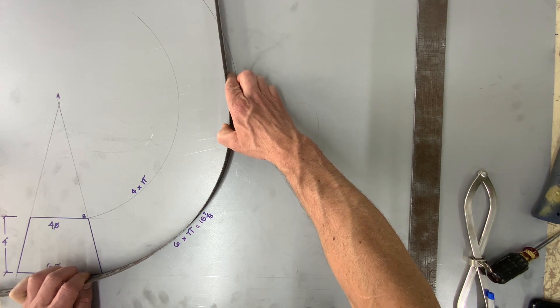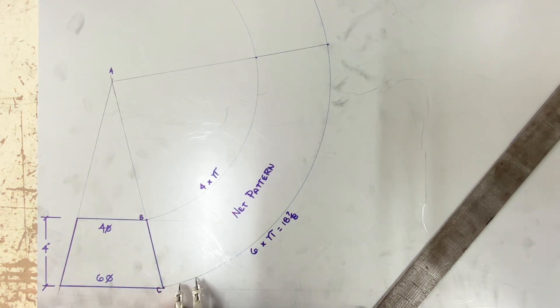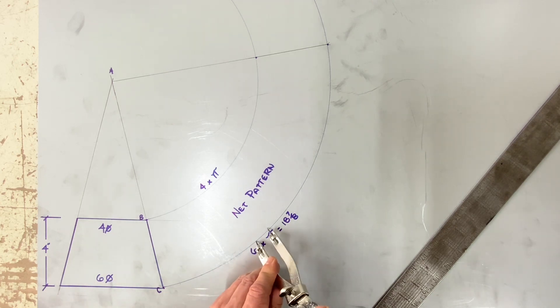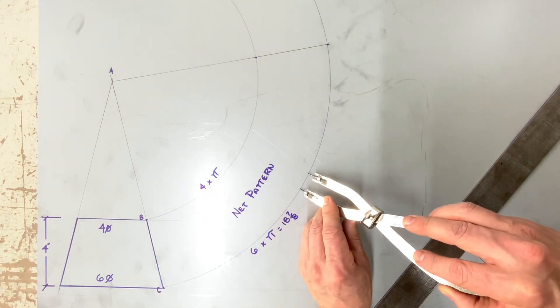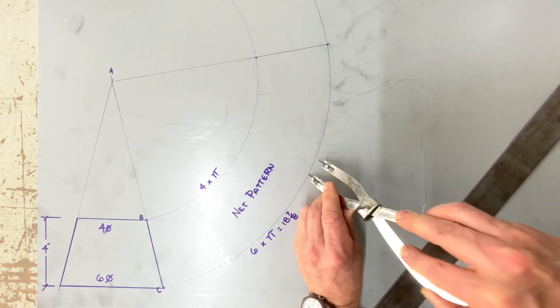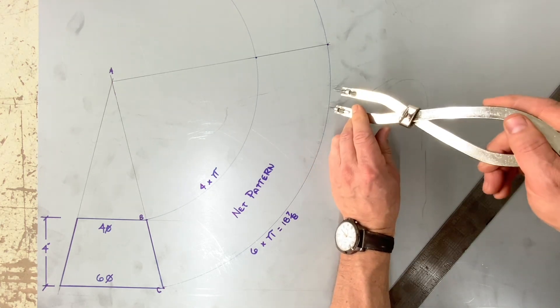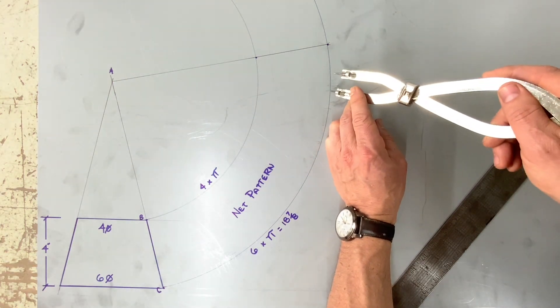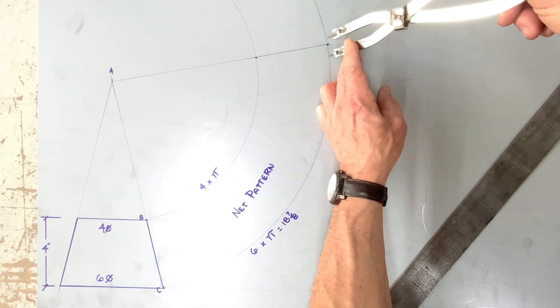So from now or starting at point C, you must measure somehow eighteen and seven eighths on that bottom stretch out. You can either use the circumference rule. You can either use your compass, and in this case here I set my compass to one inch. I would have to step it off eighteen times and then add seven eighths to it.